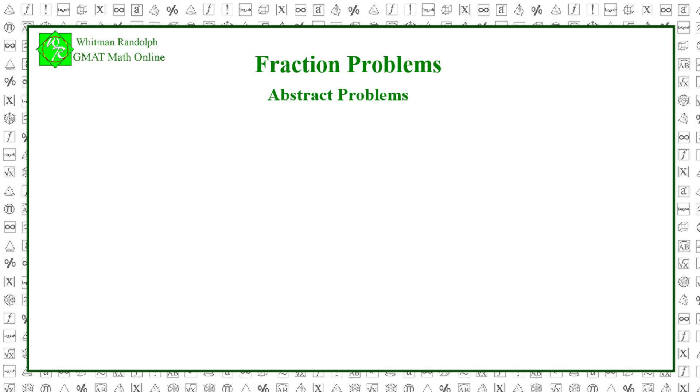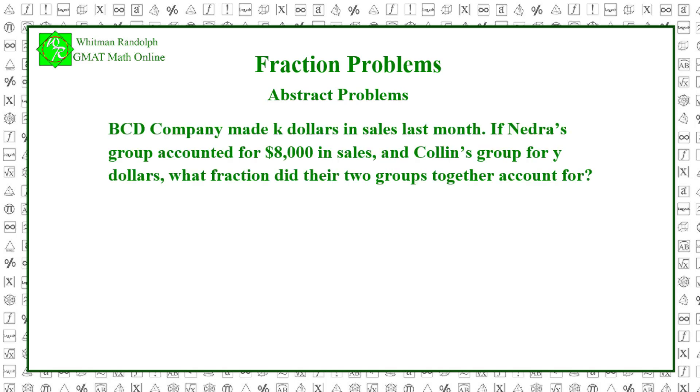Here's a sample problem. BCD Company made K dollars in sales last month. If Nedra's group accounted for $8,000 in sales and Colin's group for Y dollars, what fraction did their two groups together account for? And here are some possible answers. Let's find the solution.